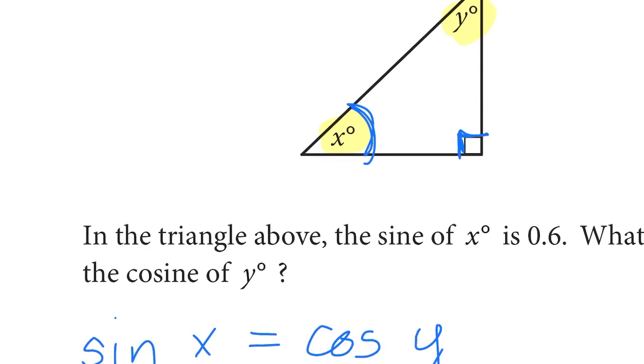But the identity is that the sine of x is equal to the cosine of y. Whenever you're talking about a right triangle, the sine of one of your acute angles, not the 90 degree angle, but of your other two acute angles, the sine of one is equal to the cosine of the other, and vice versa.